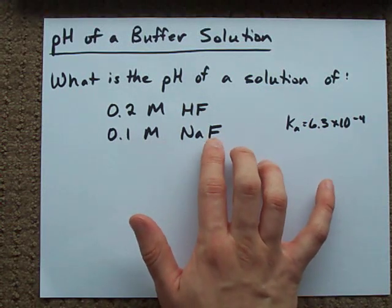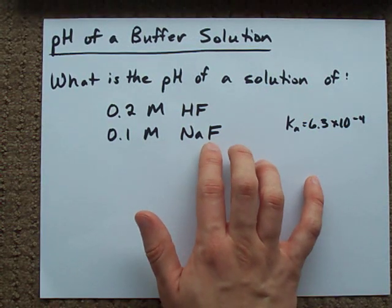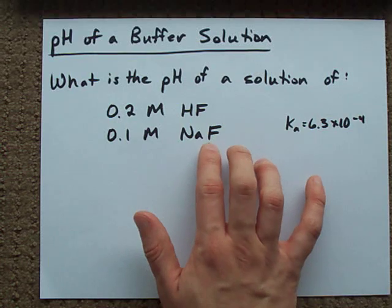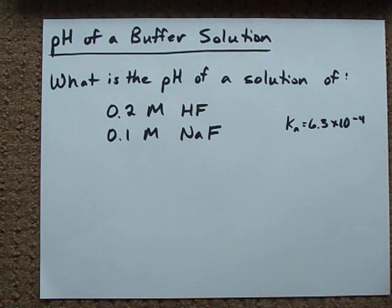When this dissolves, it will produce F minus ions, which are the conjugate base of hydrofluoric acid. How are we gonna figure this one out?